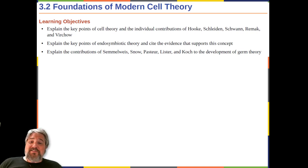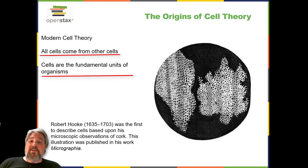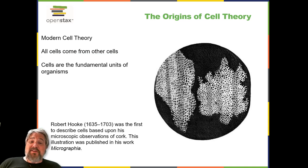While some scientists were arguing over the theory of spontaneous generation, others were making discoveries leading to a better understanding of what we now call cell theory. Modern cell theory has two basic tenets: all cells only come from other cells — the principle of biogenesis — and cells are the fundamental units of organisms. Today these tenets are fundamental to our understanding of life on Earth, though modern cell theory grew out of the collective work of many scientists.